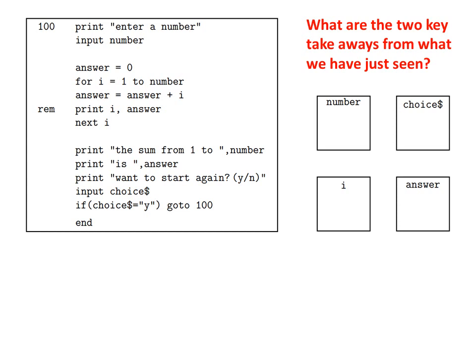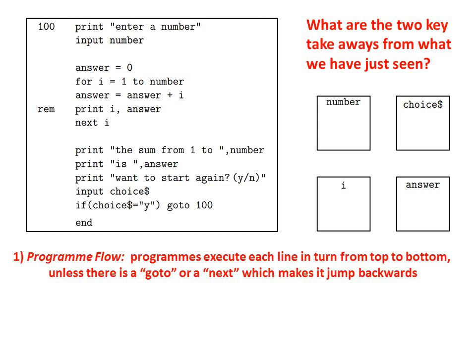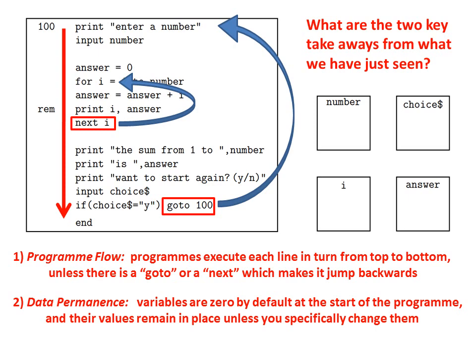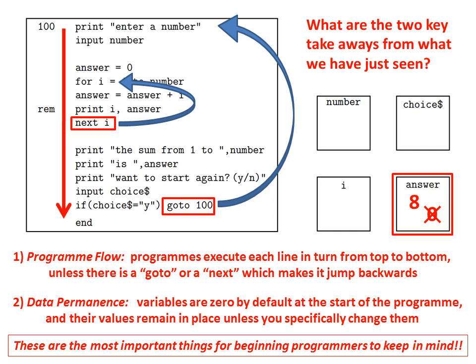So, what are the two key takeaways from what we have just seen? First, there is the concept of program flow: programs execute each line in turn, from top to bottom, unless there is a goto or a next, which makes it jump backwards. Second, there is the concept of data permanence: variables are set to zero by default at the start of the program, and their values remain in place unless you specifically change them. These are the most important things for beginning programmers to keep in mind.